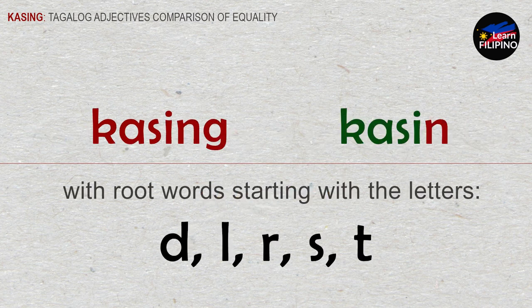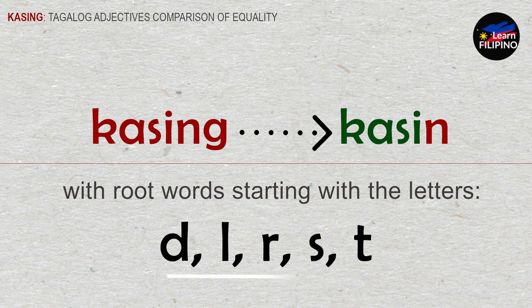Before we move on to example sentences, you should know that 'kasing' has different variants that depend on the first letter of the root word. First, 'kasing' becomes 'kasin' if the root word starts with the letters D, L, R, S, and T.